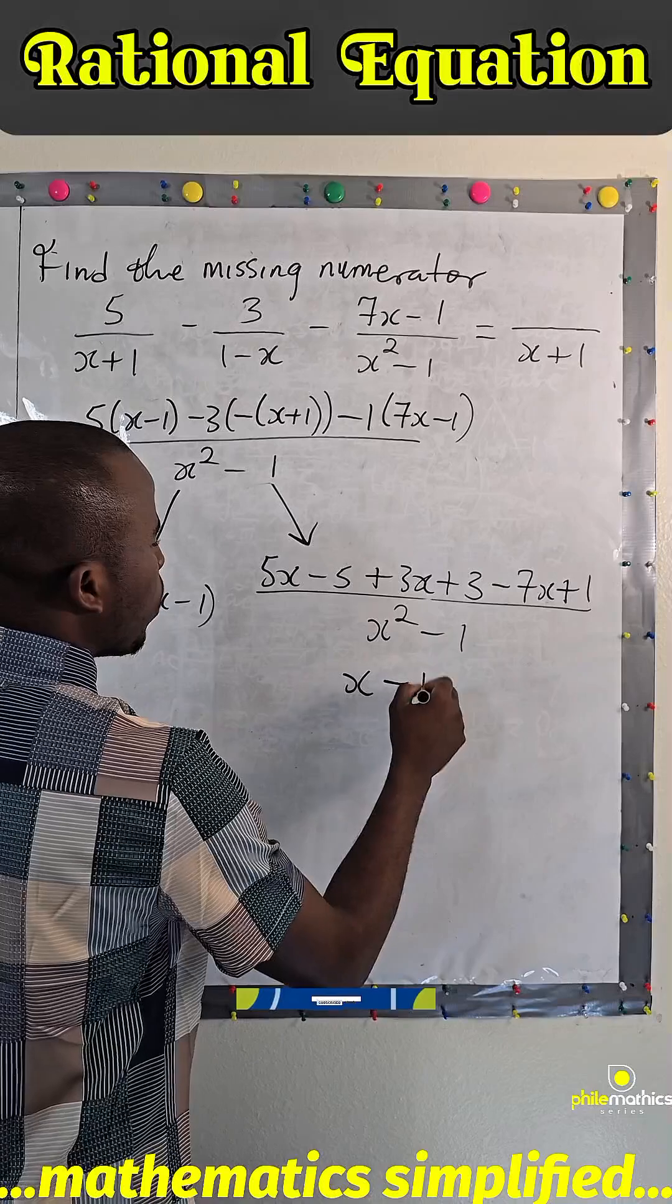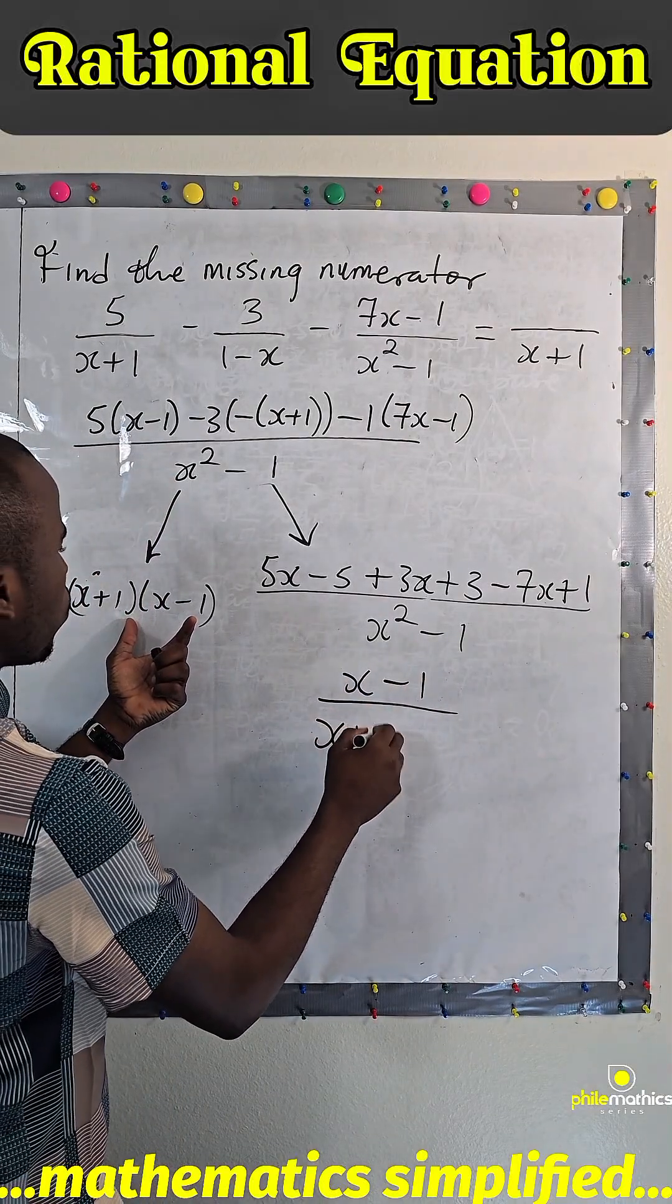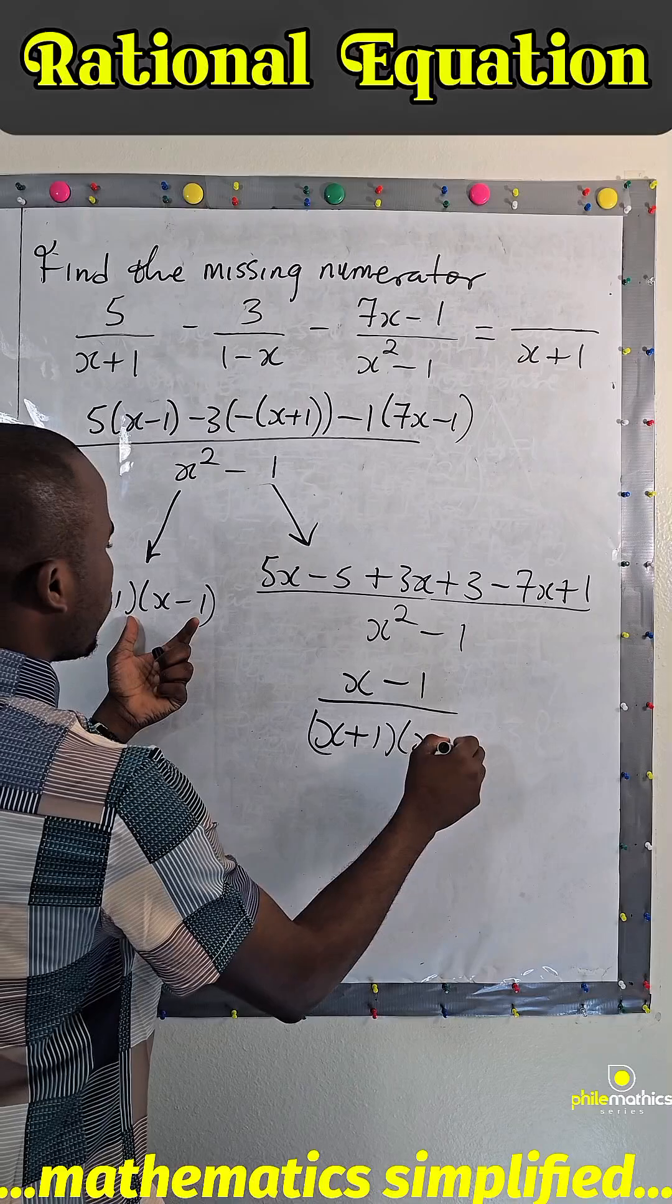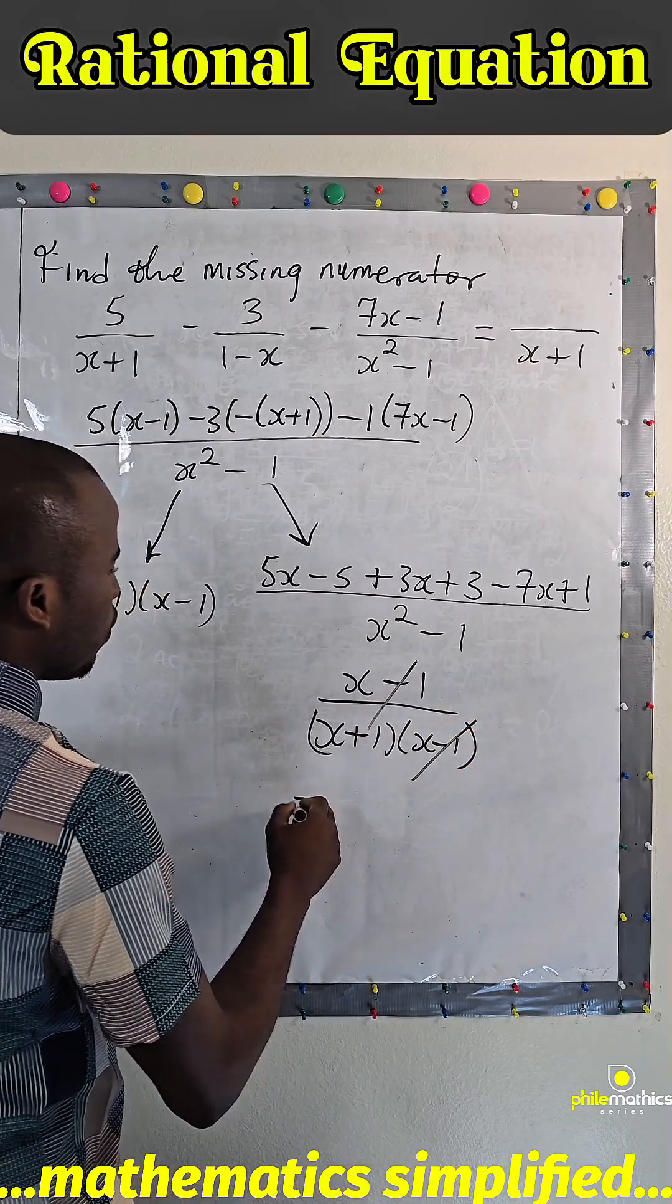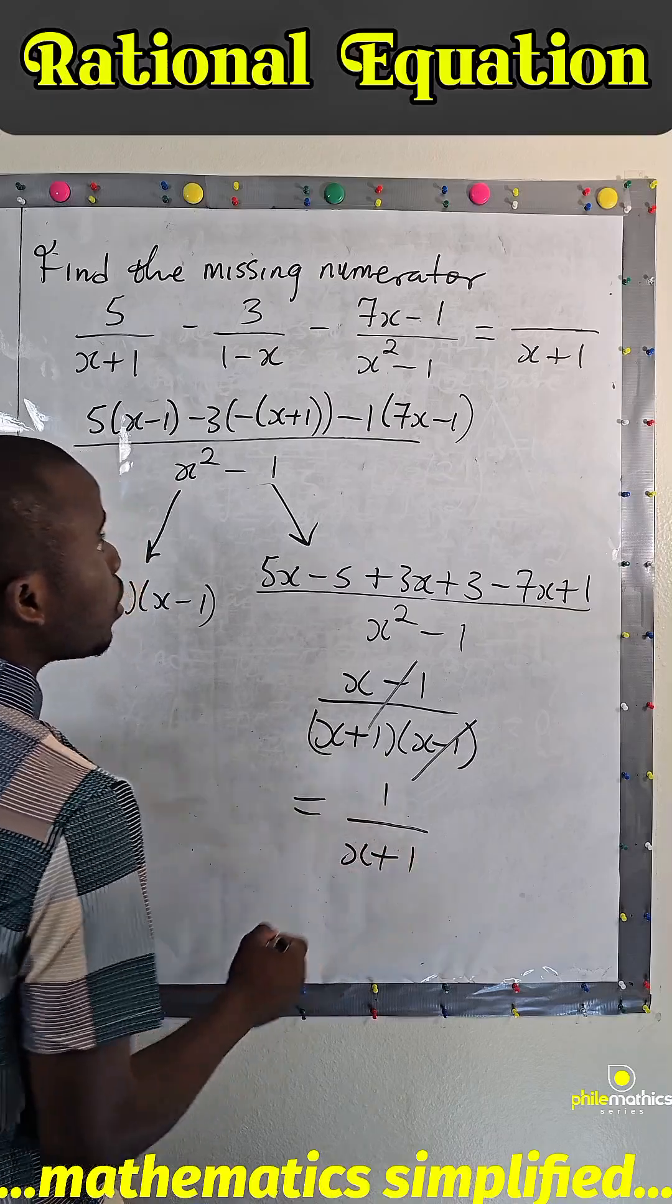Over, remember I said this is same as this, which is x + 1 times x - 1. So this can go with this, we are left with 1 over x + 1.